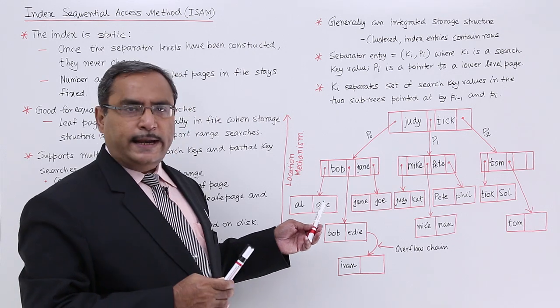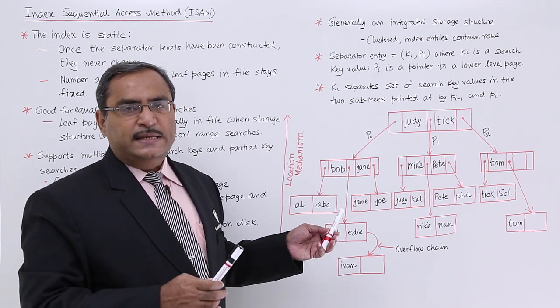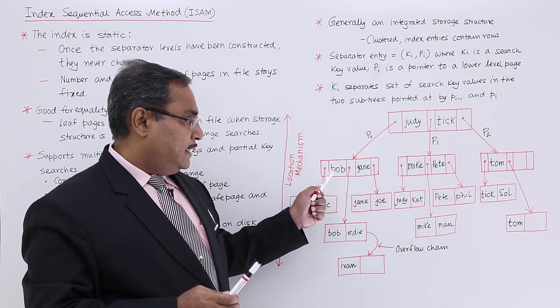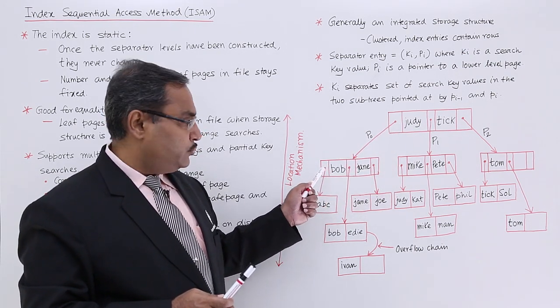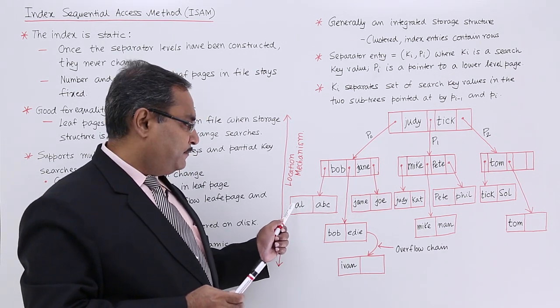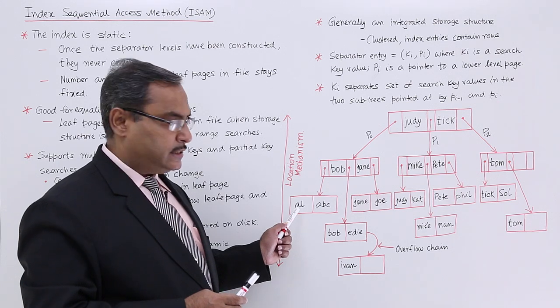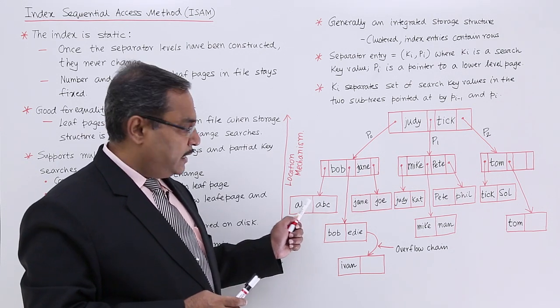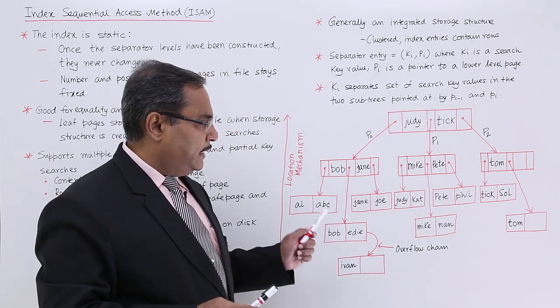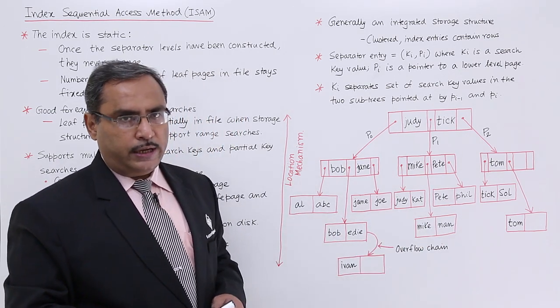Let us suppose I want to get a name say ABC. A is lesser than J, so it will be coming down to this. A is lesser than B, so it will be coming down to this. And here we can go for ABC. At first I shall come here it is not ABC, but here I will be getting ABC. And these leaf nodes are sorted. That is why in case of range searches we can access them accordingly.